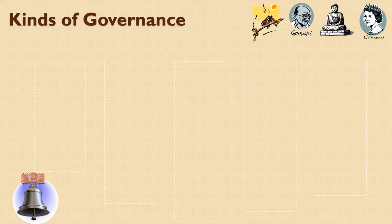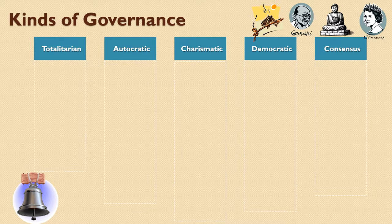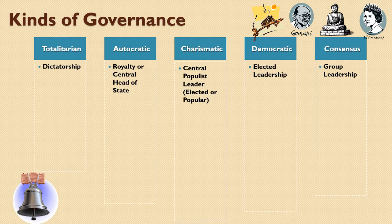The types of governance that we have are totalitarian, autocratic, charismatic, democratic, and consensus. To give you an idea of what these are about, let's take a look at the central way they govern.